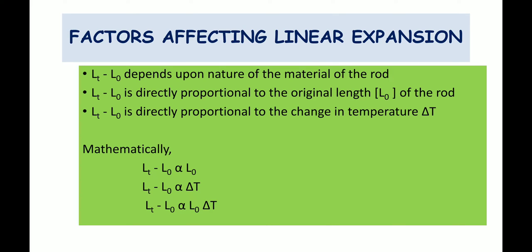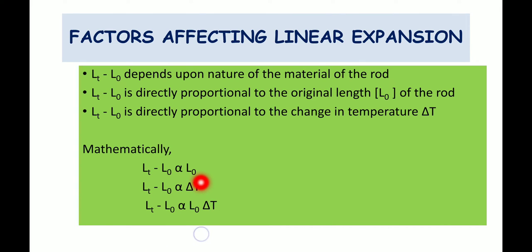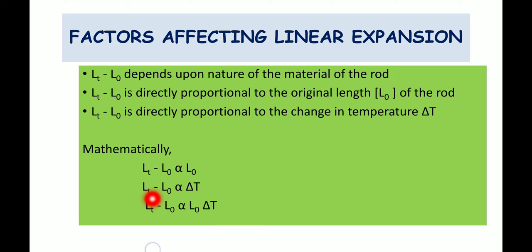When we write this mathematically, directly proportional is expressed with the ∝ sign. It means the greater the original length of the rod, the more will be the expansion; if the length is lesser, the expansion will also be less. This expansion is also directly proportional to change in temperature. Combining these two relationships, we get L_T minus L₀ is directly proportional to L₀ multiplied by ΔT.